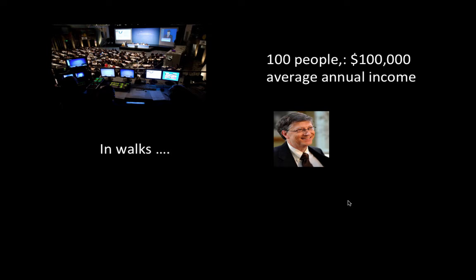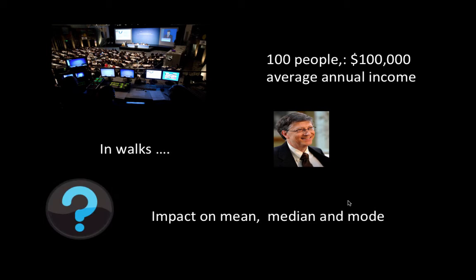So now the average income of the people in this room might become $2 million from $100,000. But you would not really think of that as a true representation of the income of that room of people. You would say most people have incomes between $80,000 and $120,000, so the most representative figure is still around $100,000. In this sense, the mean is not a great representation when you have what are called outliers — Bill Gates' income is a big outlier, so far from the typical value that it distorts the mean.